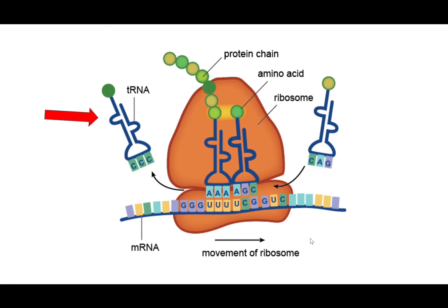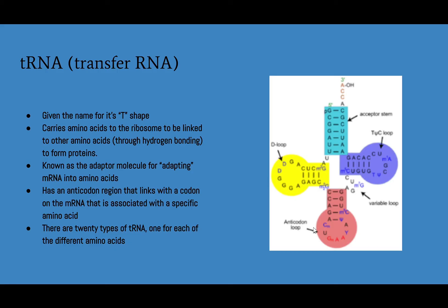This arrow is pointing to tRNA. tRNA, or transfer RNA, gets its name for its T shape. It carries amino acids to the ribosome to be linked with other amino acids to form proteins.